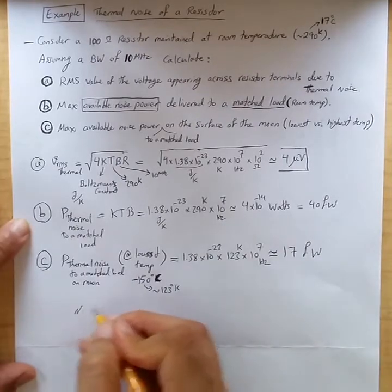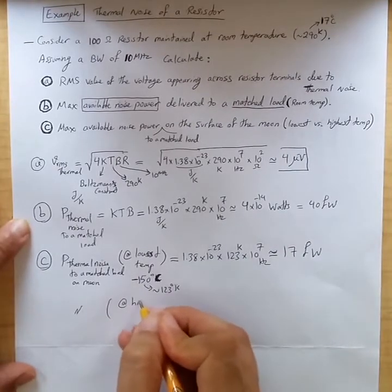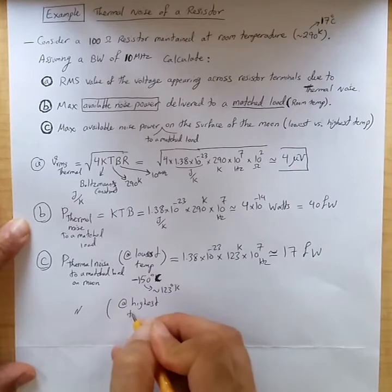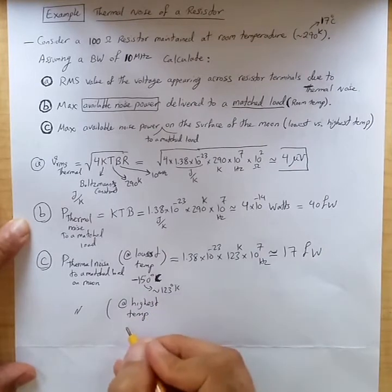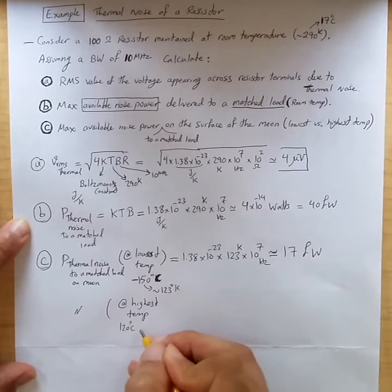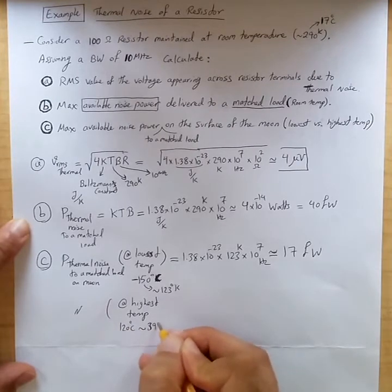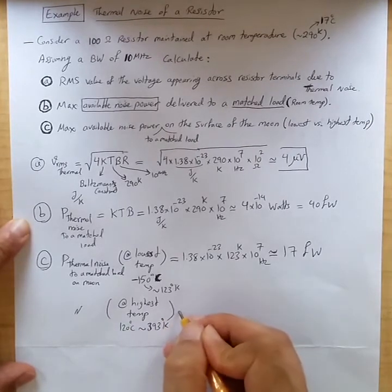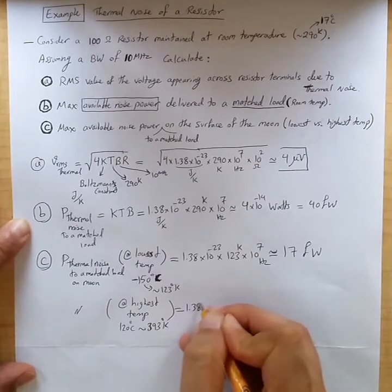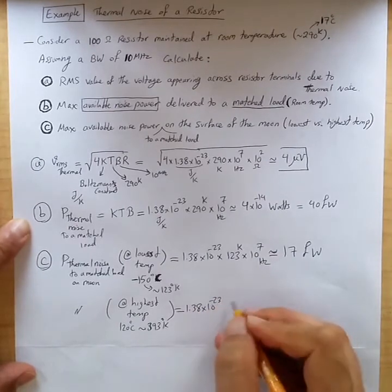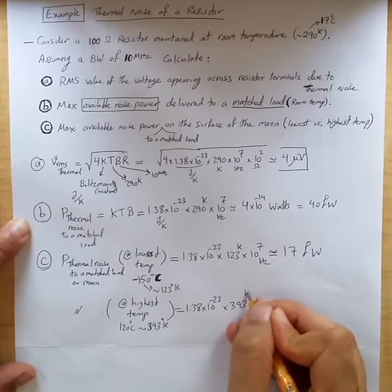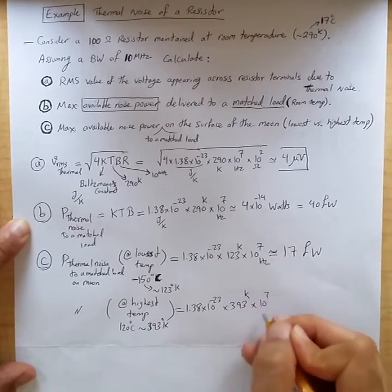And the same thing at highest temperature on the surface of the moon. This can be as high as 120 degrees C, which is roughly 393 degrees Kelvin. And that is equal to 1.38 times 10 to the minus 23 times 393 Kelvin times 10 to the 7 hertz.